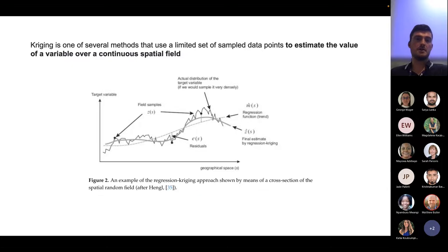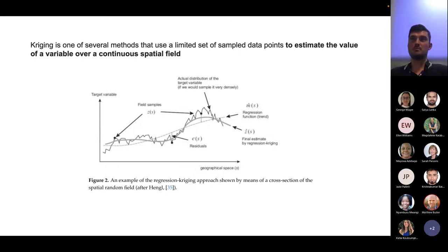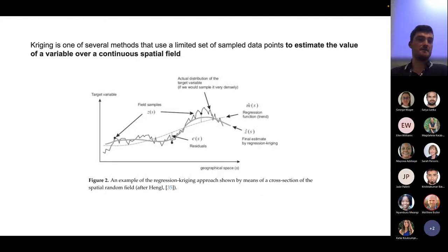We're also going to use kriging, which we've only mentioned a few times. I'm no expert by any means, but it's a method of estimating the value of a variable across a spatial field and it can be a useful tool in spatial analysis. I'll show you how to do that very basically in R.